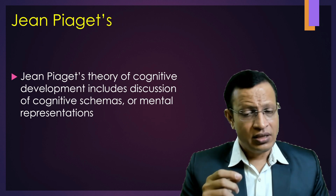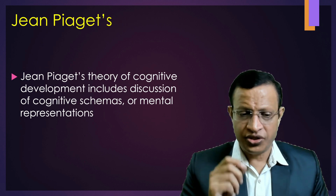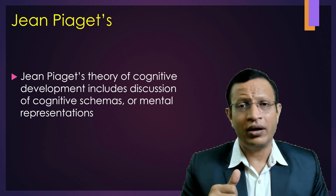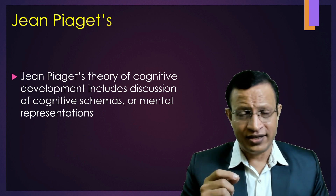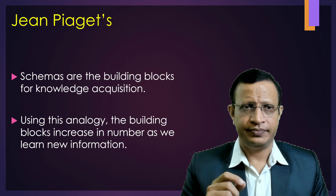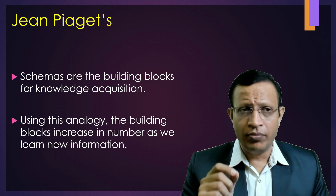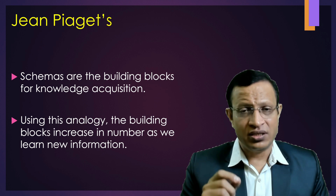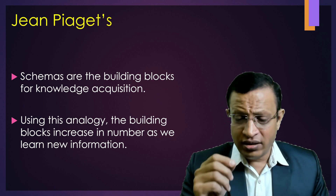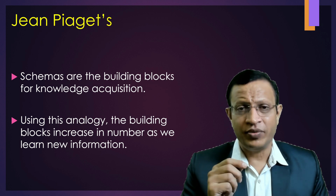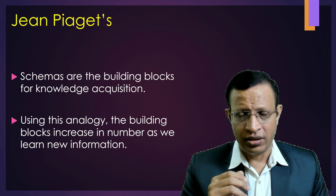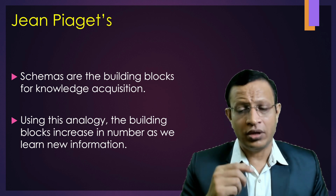Further, the cognitive schema was popularized by Jean Piaget. Piaget clearly said that his theory of cognitive development includes discussion of cognitive schemas or mental representations. He said that mental representations occur in every person during childhood development. He also said that schemas are the building blocks for knowledge acquisition — they increase in number as we learn new information, and past events will be used to interpret new events.